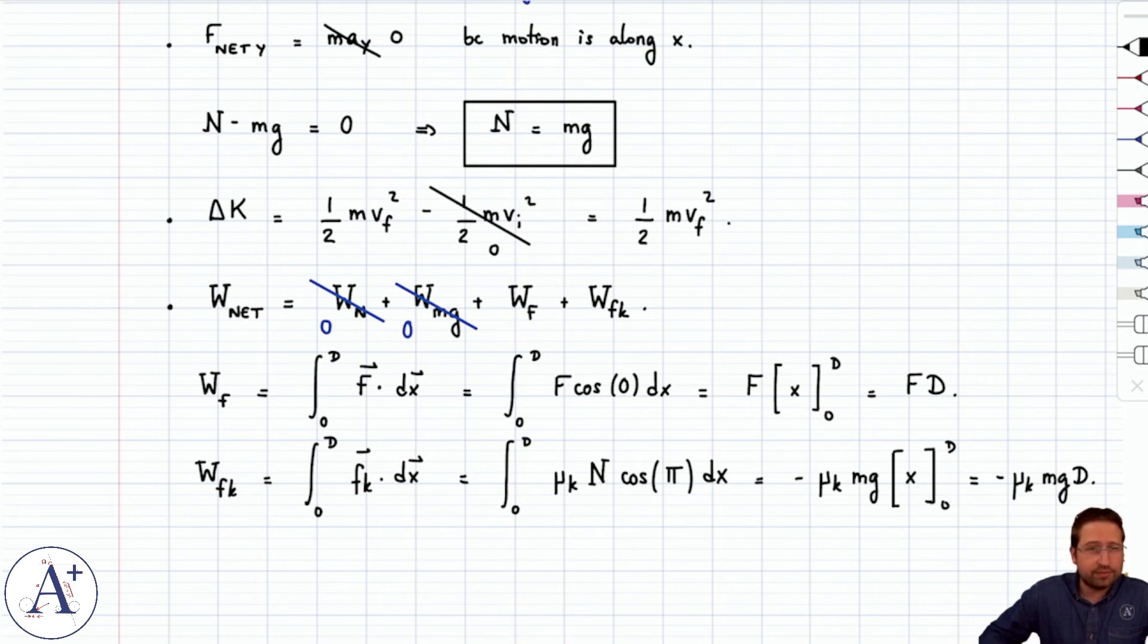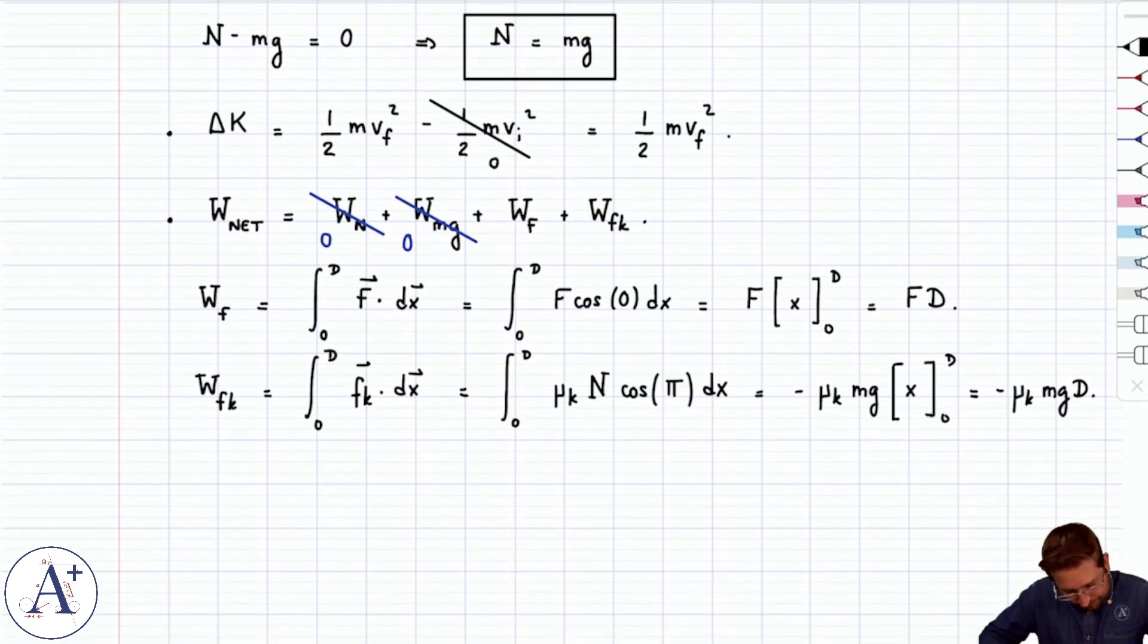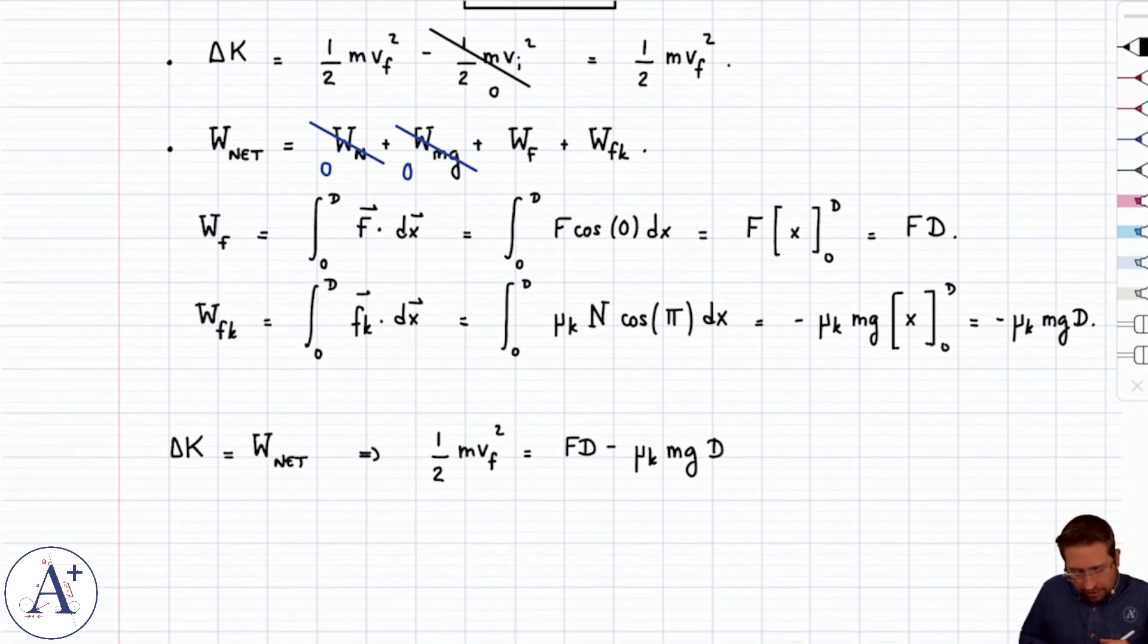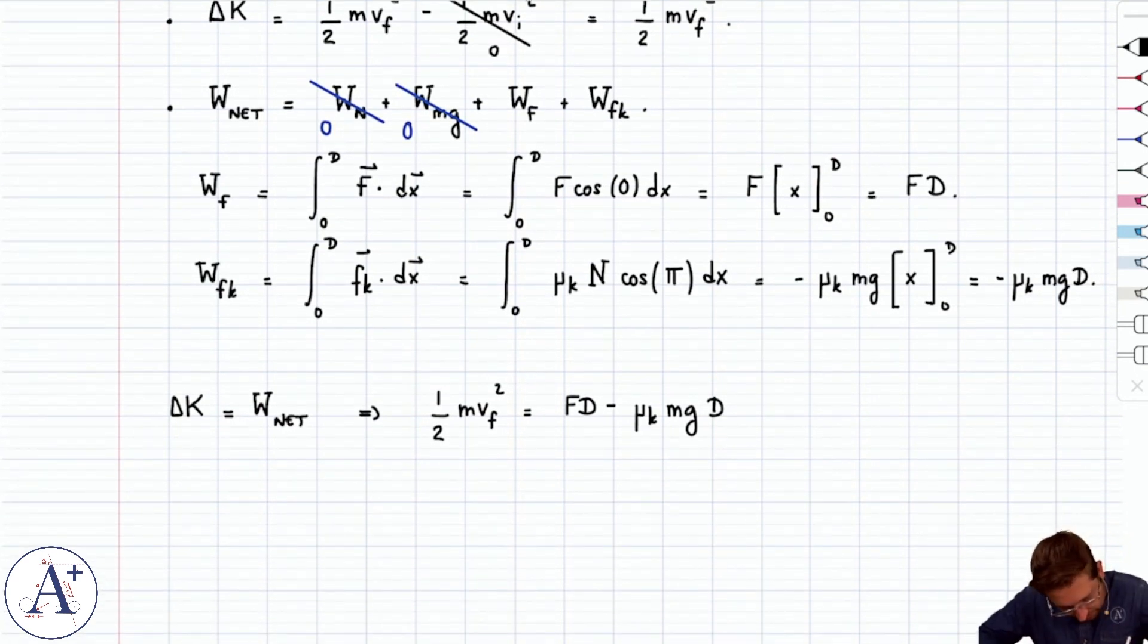Put everything together. Delta k equals work net. Delta k equals work net. Delta k yields one half of mv final squared is equal to fd minus mu k mgd. And again, we get one equation, so we can solve for one unknown. Here we said we wanted to solve for v final.